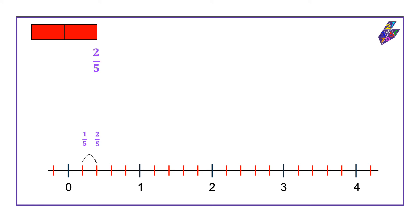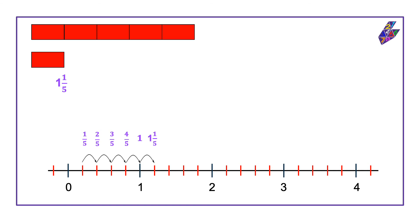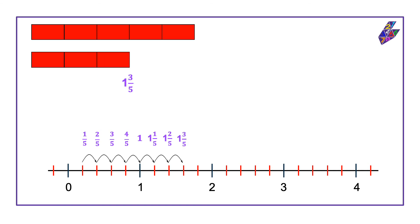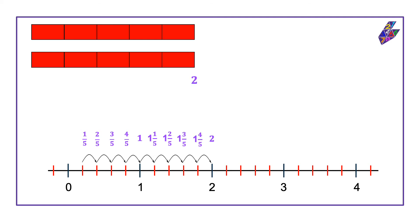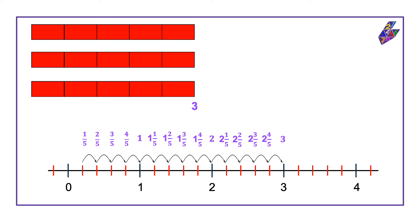Now using mixed numbers: zero, one-fifth, two-fifths, three-fifths, four-fifths, one, one and one-fifth, one and two-fifths, one and three-fifths, one and four-fifths, two, two and one-fifth, two and two-fifths, two and three-fifths, two and four-fifths, three.